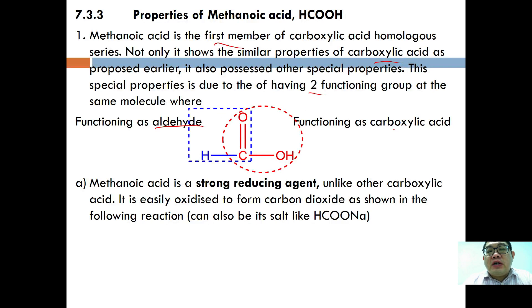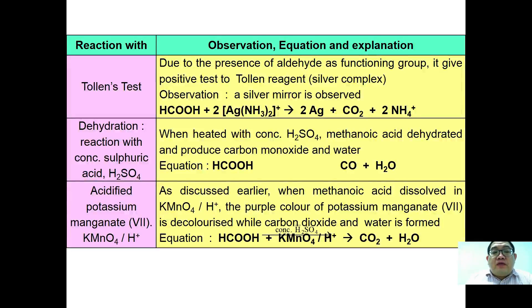Methanoic acid is a well-known strong reducing agent. Unlike other carboxylic acids, it is easily oxidized to form carbon dioxide as shown in the following reaction, and can also react in the same way as its salt.